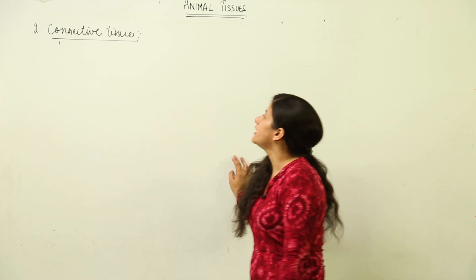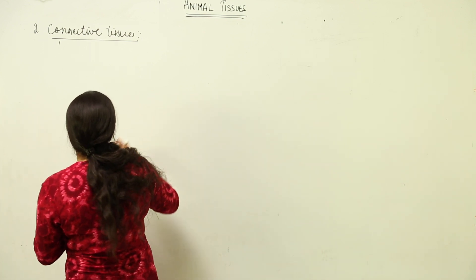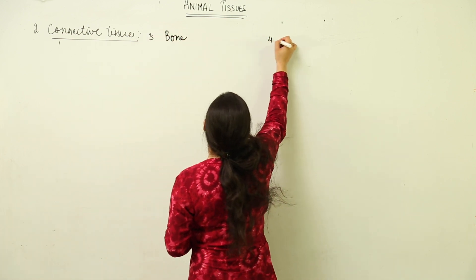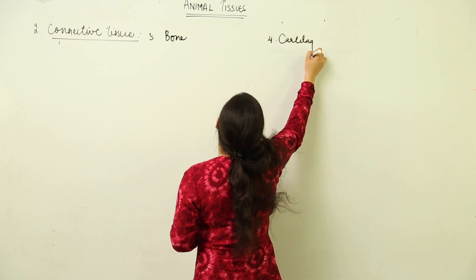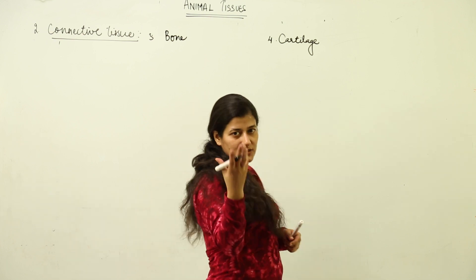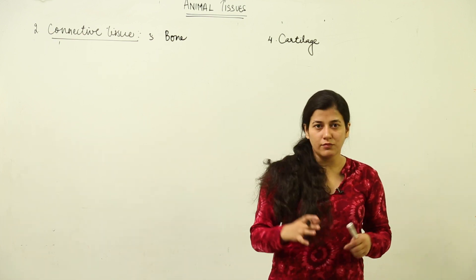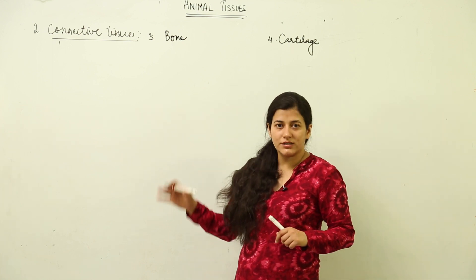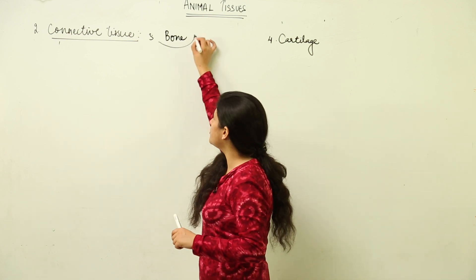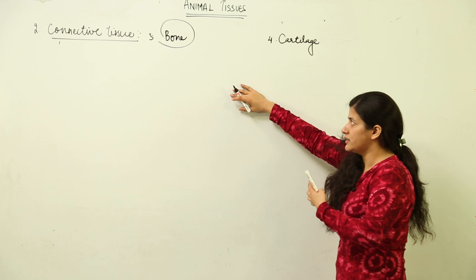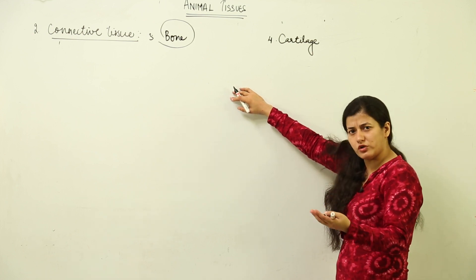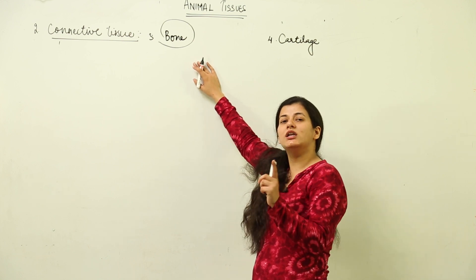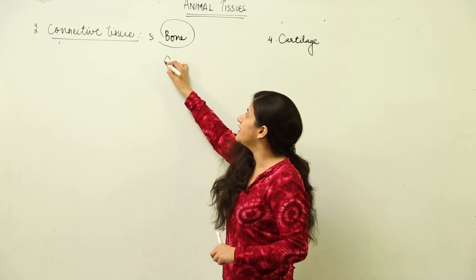Our skull bones are not movable because of white fibrous connective tissue. Now moving further, the third type of connective tissue is bone, and another is cartilage — the soft bone. As with all connective tissues, there is a matrix, a cellular component, and fibers. In the case of bone, it provides the center of mass and is very important for locomotion.